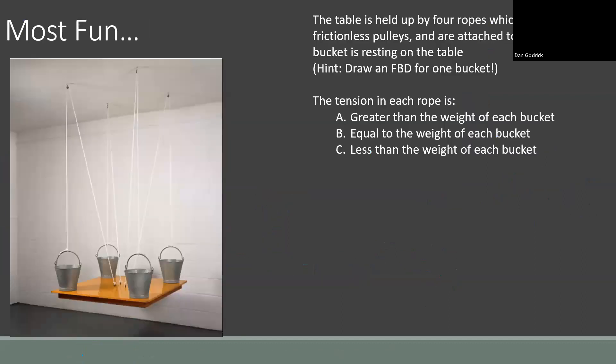All right. So let's see. We got dy, 106 pounds. dx is 42.4 pounds. And gx is going not to the right, but to the left because we said it was minus 42.4 pounds. All right. So one last one. It says the table is held up by four ropes, which pass through frictionless pulleys and are attached to the buckets. Each bucket is resting on the table. It says, hint, draw a free body diagram for one bucket. And it says the tension in each rope is greater than the weight of each bucket, equal to the weight of each bucket or less than the weight of each bucket. So draw our free body diagram. There's our bucket. We have our tension going up, our weight going down, and our normal force going up. The force of the table.